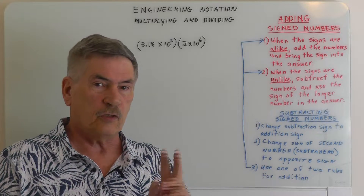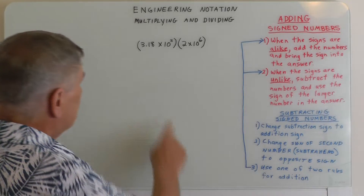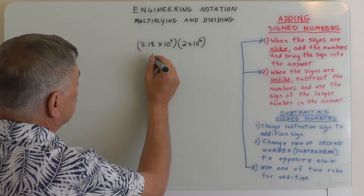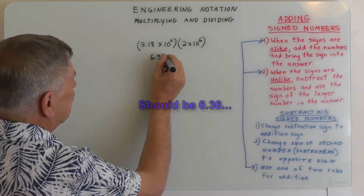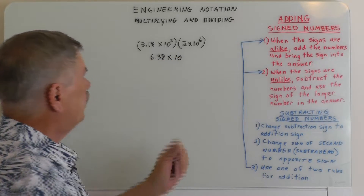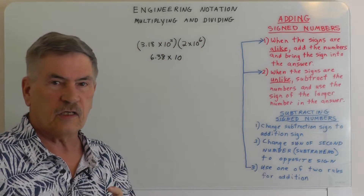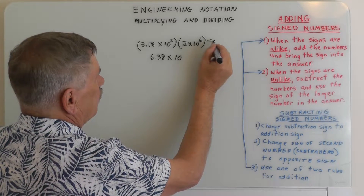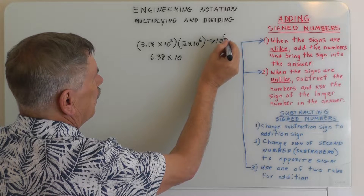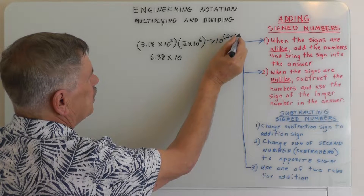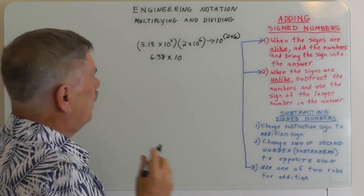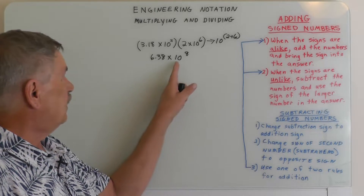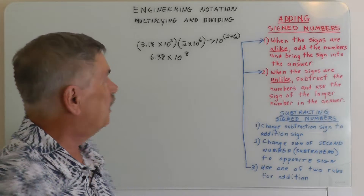The first step is we're going to multiply the mantissas. So we're going to take 3.18, multiply it times 2, and that gives us 6.38 times 10. Then we look at the exponents — 2 and 6 — and we add them together. So 10 to the 2 plus 6 gives us 10 to the 8. We bring down the 8 and put it right beside the base 10, and that is going to be the answer.